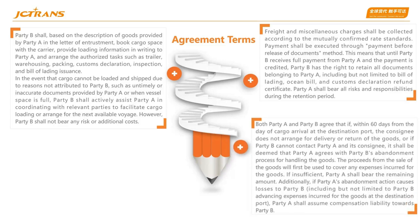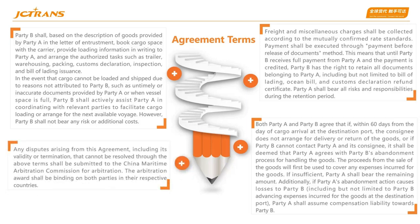Both Party A and Party B agree that if, within 60 days from the date of cargo arrival at the destination port, the consignee does not arrange for delivery or return of the goods, or if Party B cannot contact Party A and its consignee, it shall be deemed that Party A agrees with Party B's abandonment process for handling the goods. The proceeds from the sale of goods will first be used to cover any expenses incurred. If insufficient, Party A shall bear the remaining amount. Additionally, if Party A's abandonment action causes losses to Party B, including Party B's advancing expenses at the destination port, Party A shall assume compensation liability towards Party B. Any disputes arising from this agreement, including its validity or termination, that cannot be resolved through the above terms shall be submitted to the China Maritime Arbitration Commission for arbitration. The arbitration award shall be binding on both parties in their respective countries.